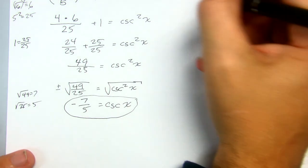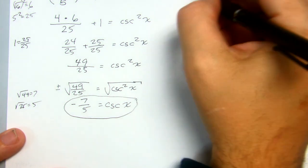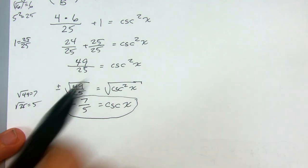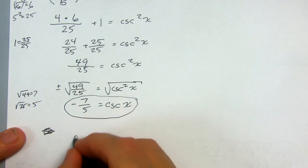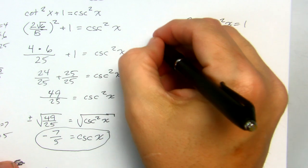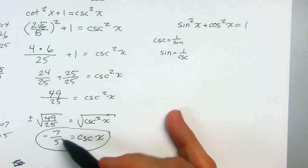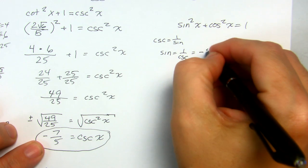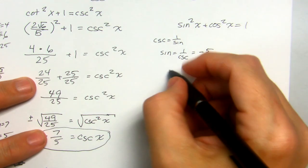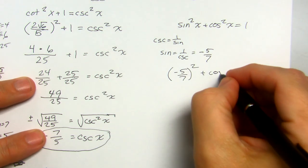Now we've figured out cosecant; we need to figure out cosine. We're going to use sine squared x plus cosine squared x equals 1. The reason is that cosecant equals 1 over sine, or sine equals 1 over cosecant. Either way, we take the reciprocal of the cosecant value, which gives us negative 5 over 7 for sine. So: (negative 5 over 7) squared plus cosine squared x equals 1.